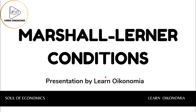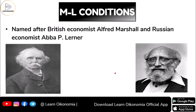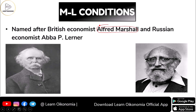As the name suggests, the Marshall-Lerner conditions are put forward by two famous economists. One is the British economist Alfred Marshall, who has made so many contributions to the arena of economics. The next person is Abba P. Lerner, a Russian economist. You can see both of these people here. The combination of ideas given by Marshall and Lerner is what we consider as the Marshall-Lerner conditions.